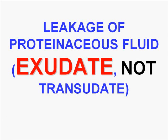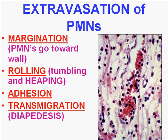After the vessels have been dilated and are leaking fluid, we now have a stimulus for the polys or PMNs to do a few things. First, they travel at the margin of the vessel and start to adhere toward the endothelium. Before they adhere, they actually start rolling and tumbling — you can see movies of this on the internet. So first there's margination, where the PMNs go toward the wall. Then they start to roll, tumble, and heap upon themselves. Then they adhere to the endothelium. And last, once they do that, they go through the endothelium — they transmigrate. Another term for this is diapedesis.